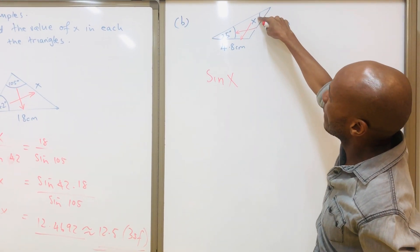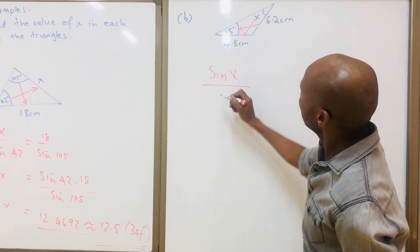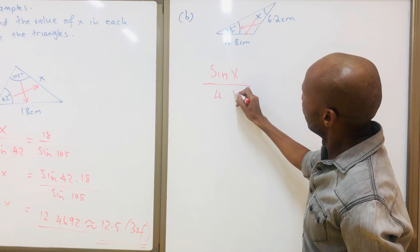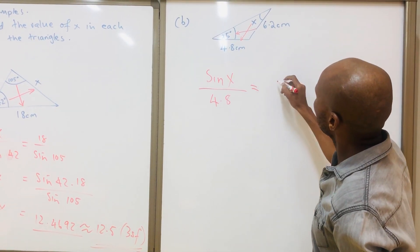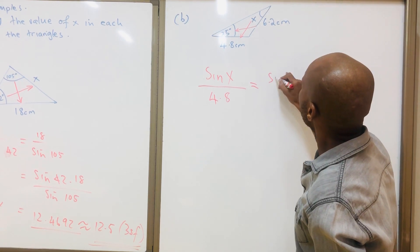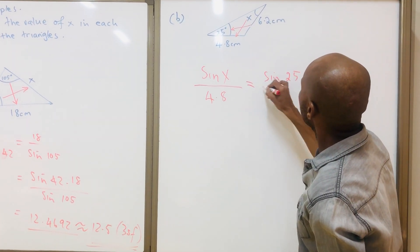So it would be sine x over 4.8, which is equal to sine 25 over 6.2.